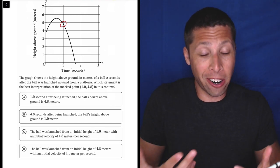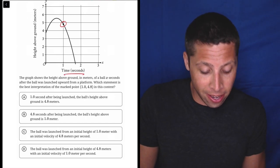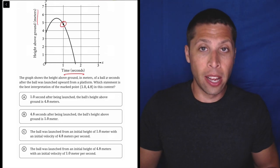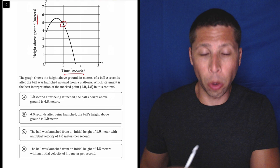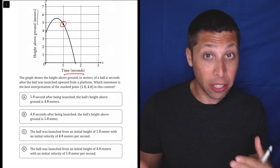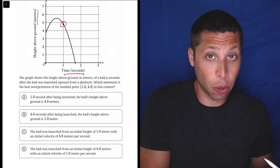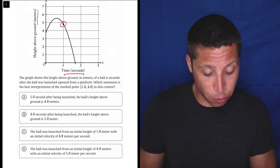And we are also given the axis labels here. Sometimes they don't give it to us when we have a story. So they will tell you in the story, but then you have to kind of label them yourself. But here they just gave us what the X coordinates mean and what the Y coordinates mean.